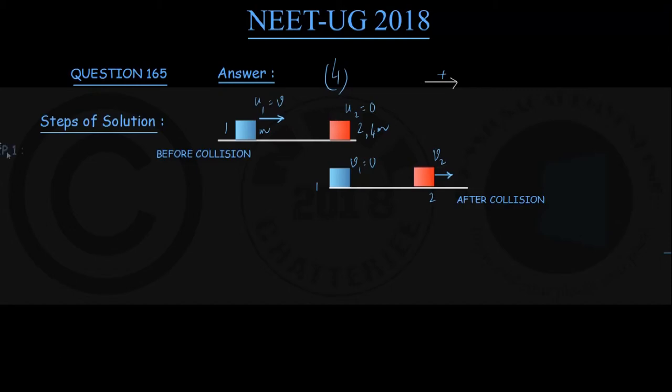We are doing step number 1 here, drawing a figure quickly of the situation. Now applying the principle of conservation of linear momentum, it says in the absence of external forces for this two-block system, linear momentum remains conserved before and after the collision.